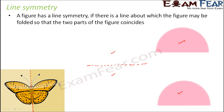So why is this called line symmetry? Because there always exists one line which divides the figure into two identical halves. That is why it is called line symmetry.